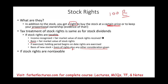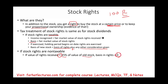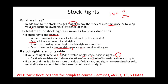If the stock rights are not taxable and the value of the rights received is less than 15% of the value of the old stock, the basis of the rights is zero. However, an election is available allowing allocation of some basis of formerly held stock to the rights. If the value of the rights is 15% or more of the old stock's value and the rights are exercised or sold, you must allocate some basis of formerly held stock to the rights.